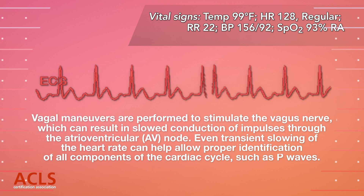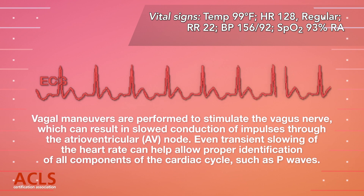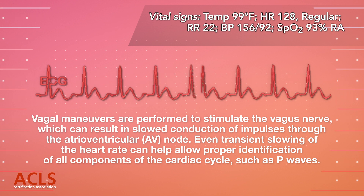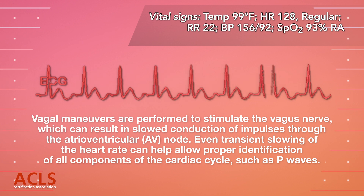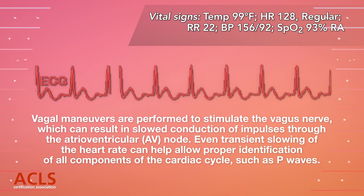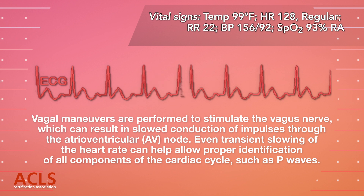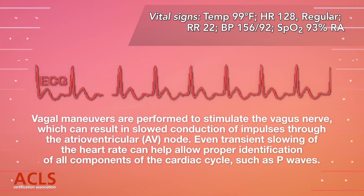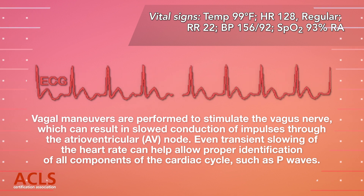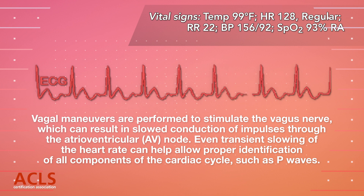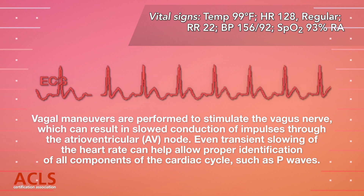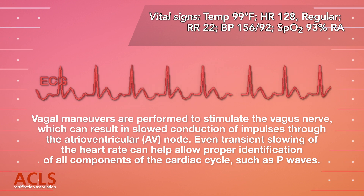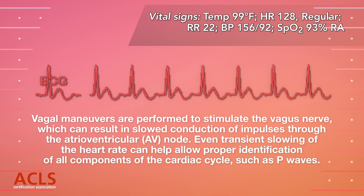Vagal maneuvers are performed to stimulate the vagus nerve, which can result in slowed conduction of impulses through the atrioventricular (AV) node. Even transient slowing of the heart rate can help allow proper identification of all the components of a cardiac cycle, such as P waves.